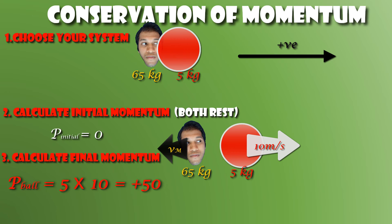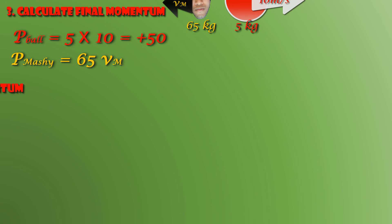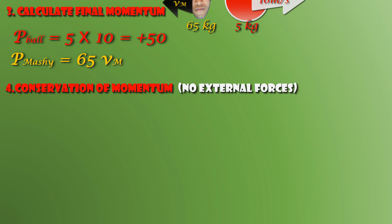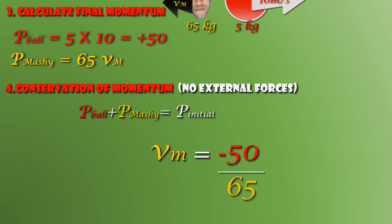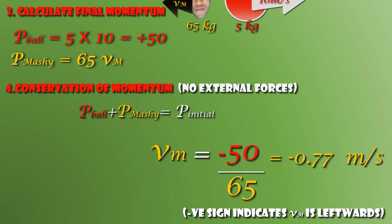I don't know the recoil speed, and here's a tip: when you don't know the value of some vector quantity, don't assume any direction — you will get the direction automatically in the final answer. So I'll assume the recoil velocity is Vm, making Mashie's momentum 65·Vm. Now invoke conservation of momentum: Mashie's force on the ball was within the system and there are no external forces, so total final momentum must equal total initial momentum. Equating and solving, the recoil velocity is approximately −0.77 meters per second. The minus sign tells us the velocity is backwards, which makes perfect sense.